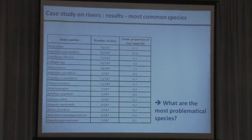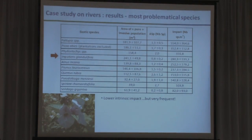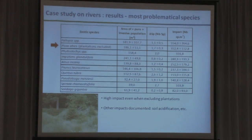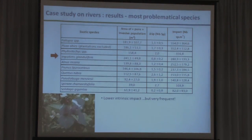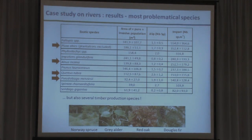Among these, which are the most problematic species? We multiplied the area invaded by the cover and by the difference in species richness between the two quadrats to get an idea of impact. The most impacting species, without surprise, was Fallopia, followed by Norway spruce, which has impacts on flora and also known impacts on soils. More generally, many ornamental plants escape from gardens, and many plants from timber production spread for forestry purposes, like gray alder, red oak, and so on.